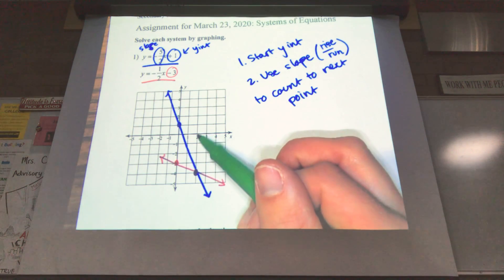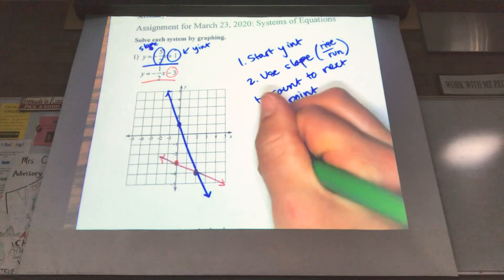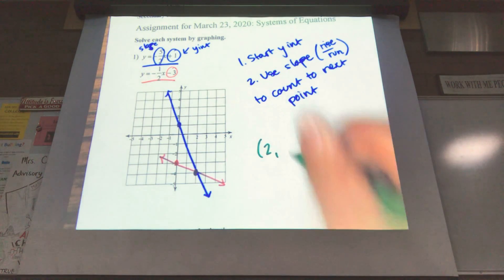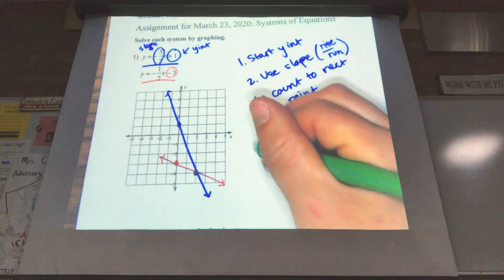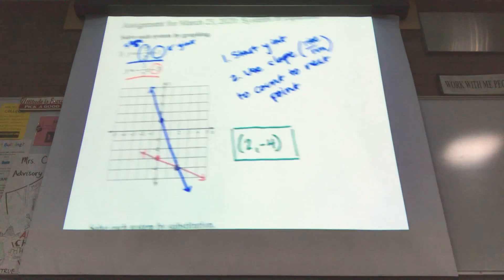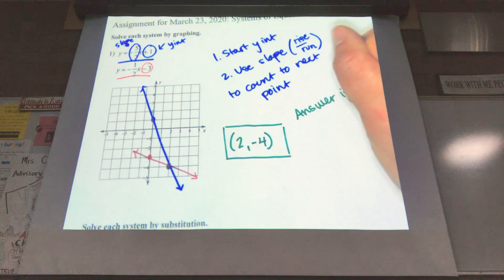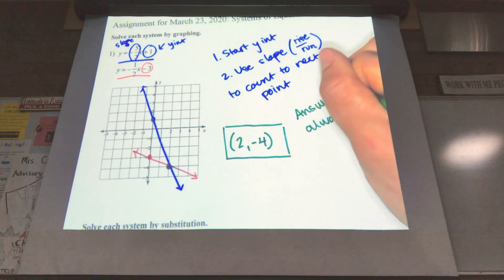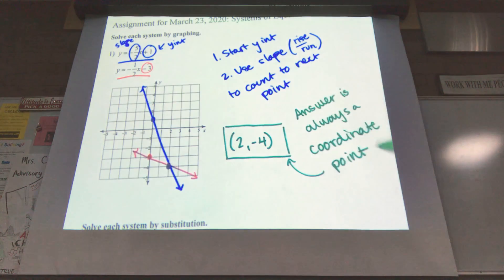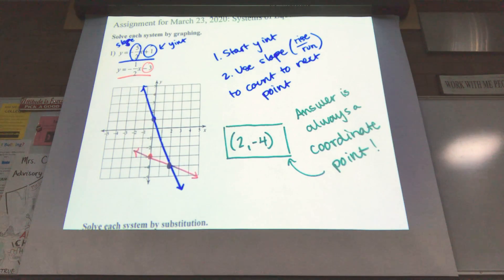So this one lines up with positive 2 on your x-axis, and then negative 4 on your y-axis. So our answer is always a coordinate point. In fact, I'll write that on your notes. The answer is always a coordinate point, whether you're solving it by graphing, substitution, or elimination. So that's one where we are solving it by graphing.